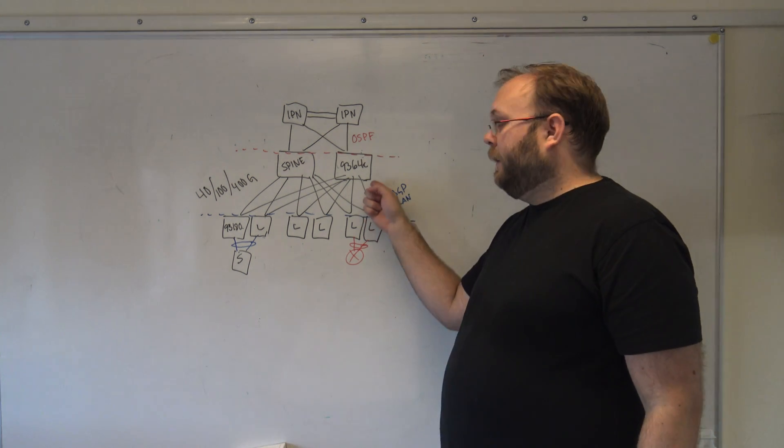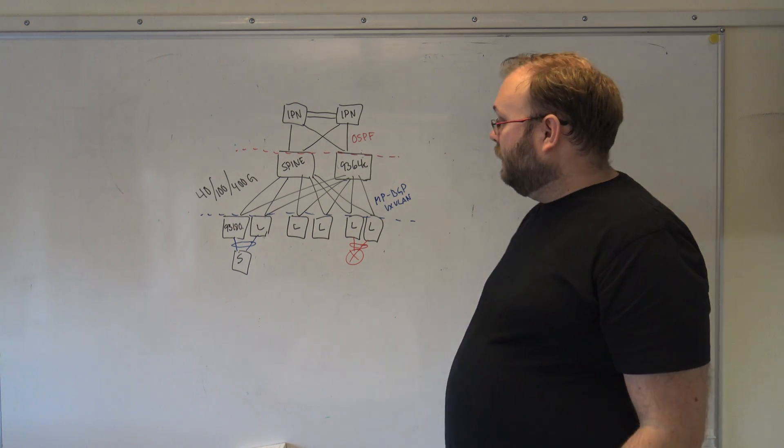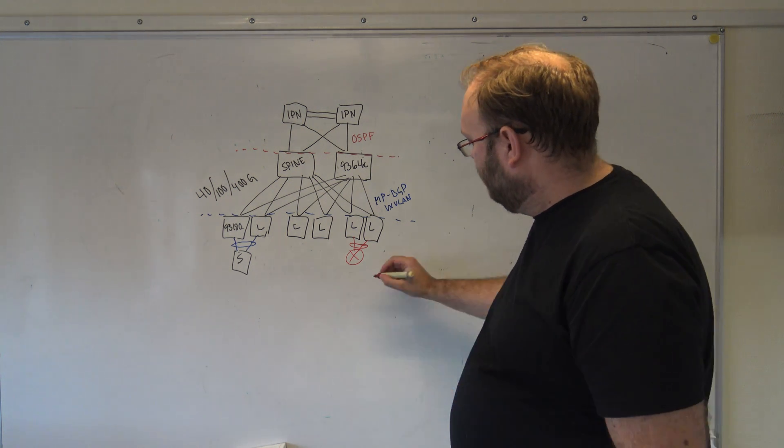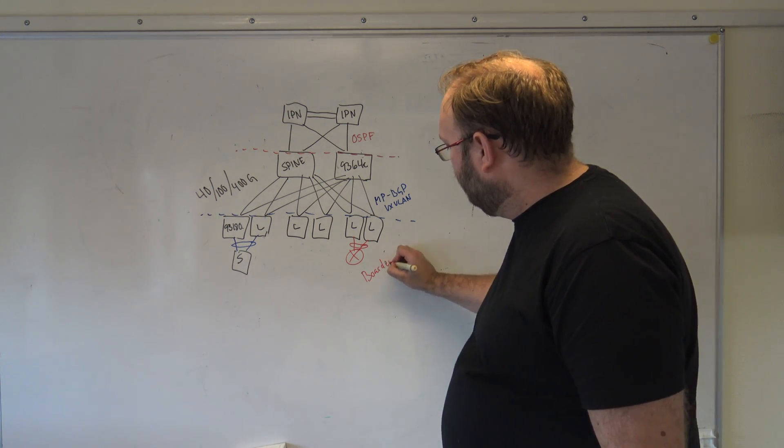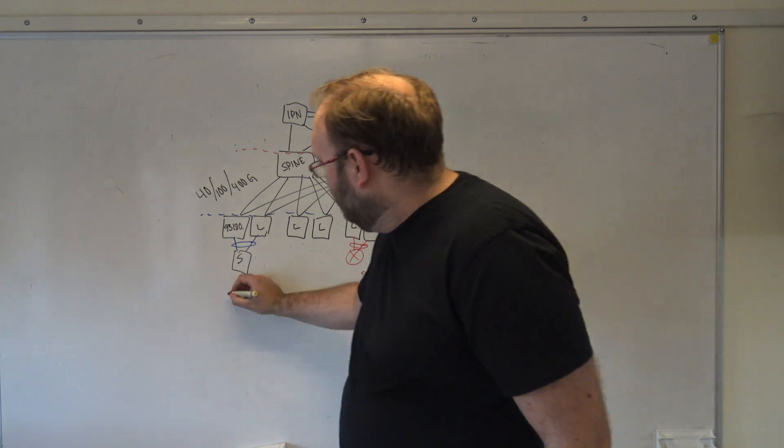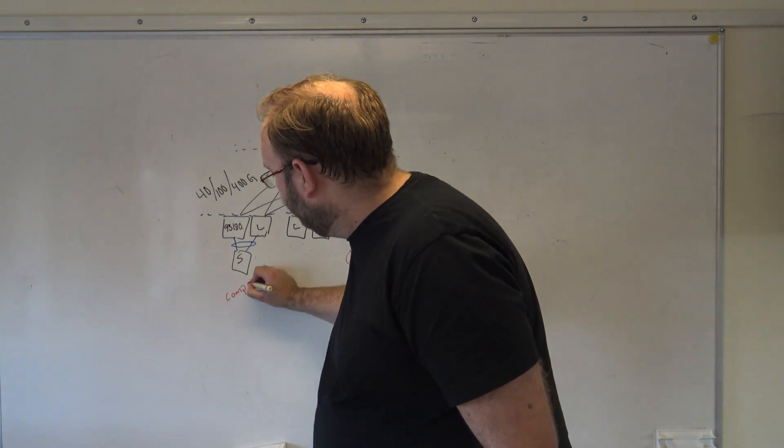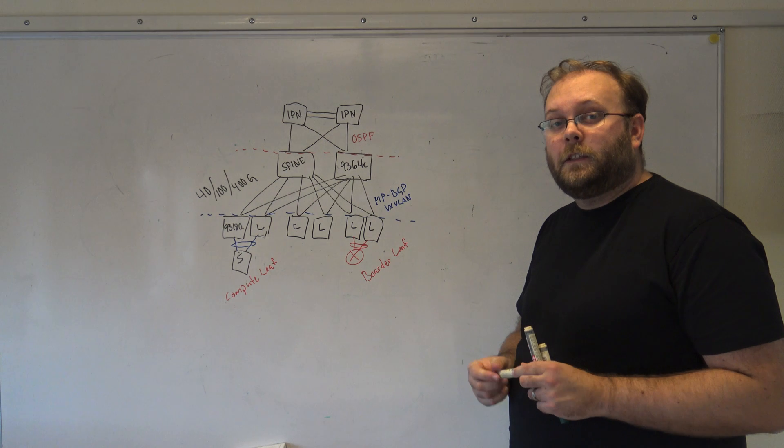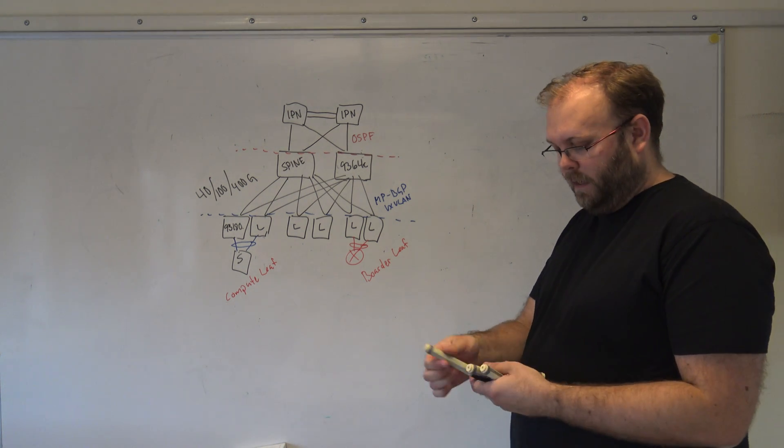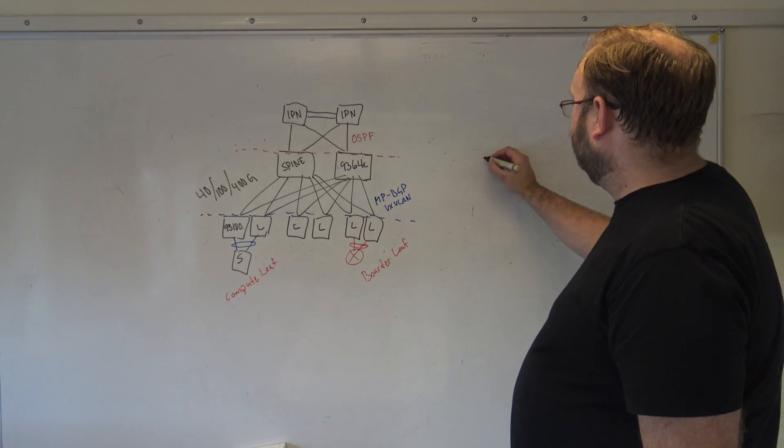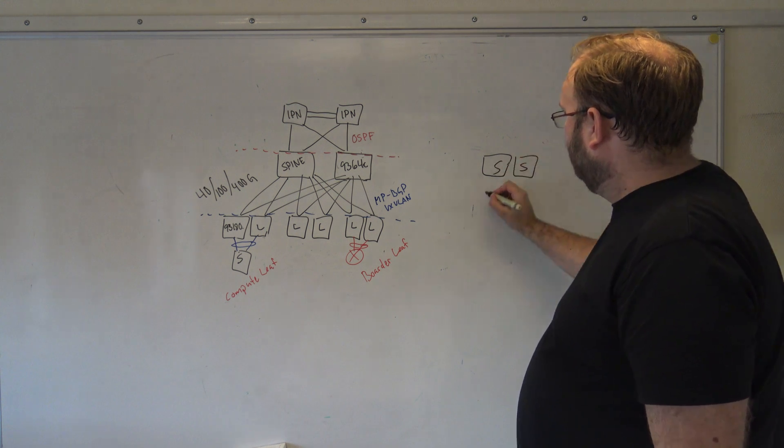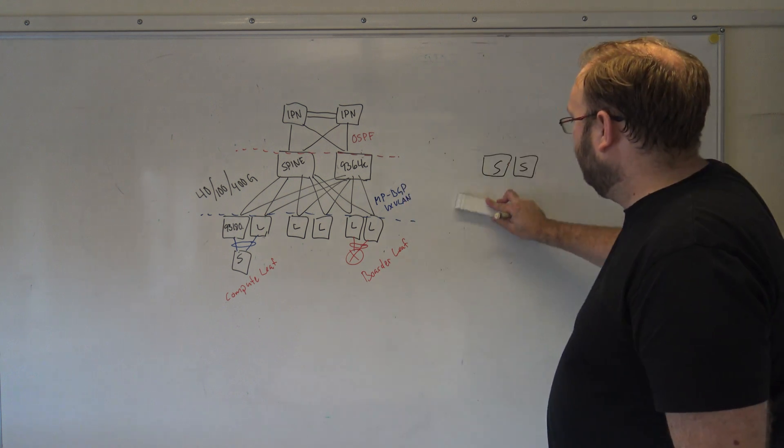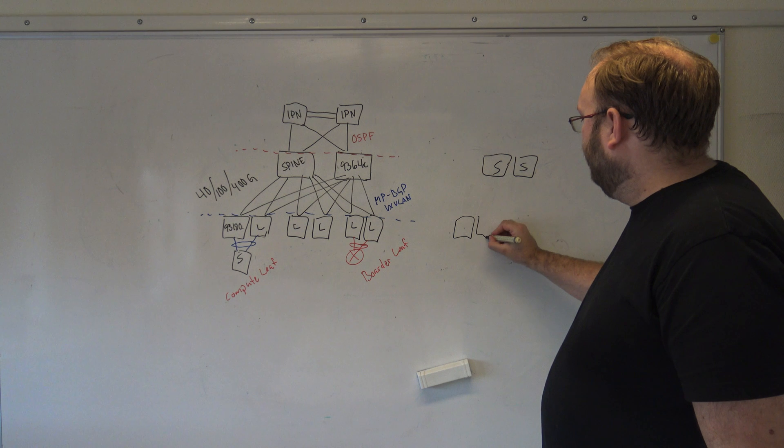So here you have the compute leaf and border leaf. If you connect this to another pod, then you have your spines and then you have your leaf switches.